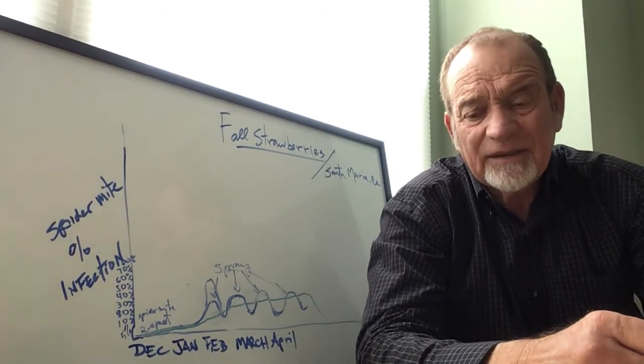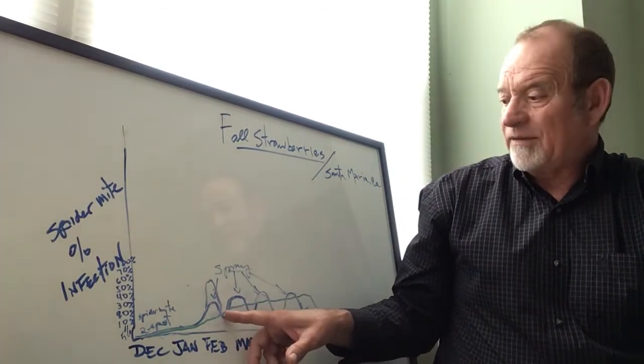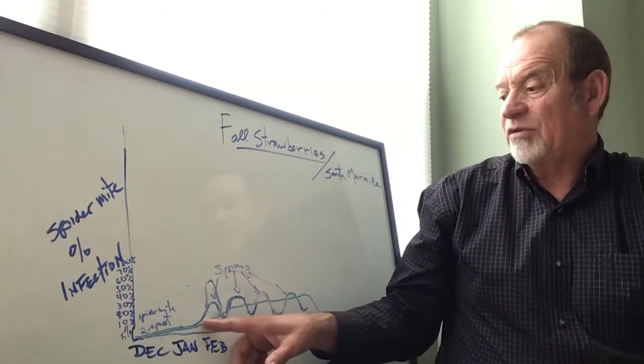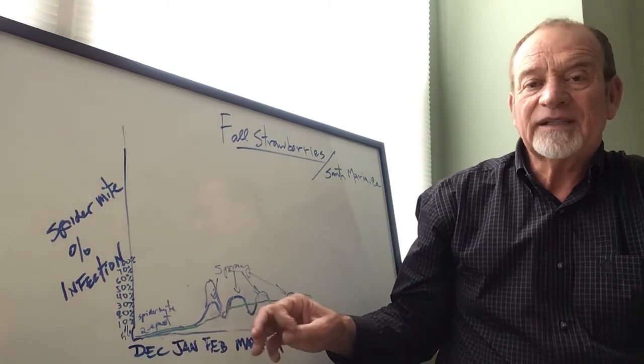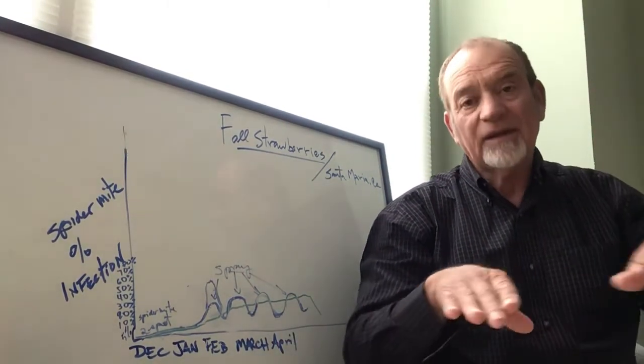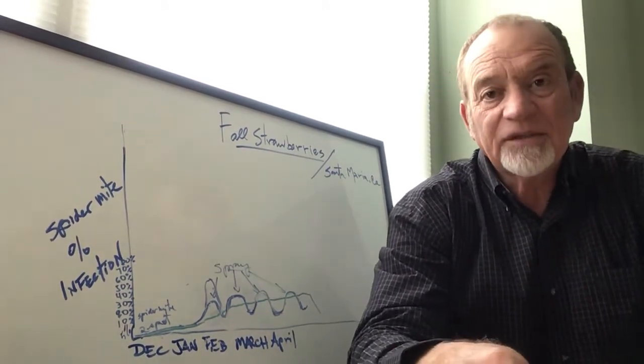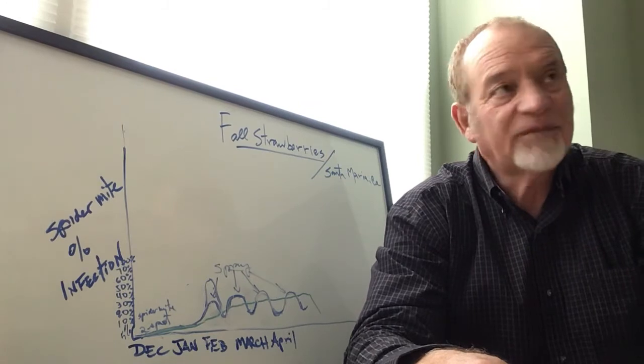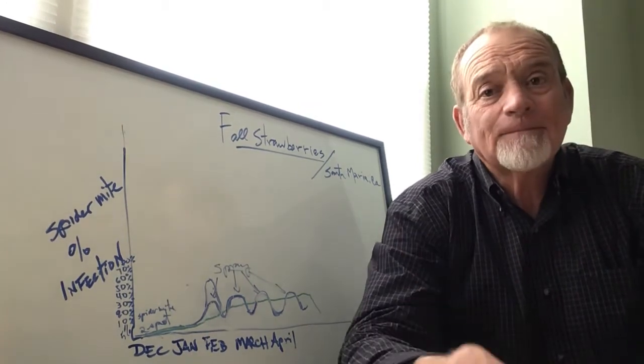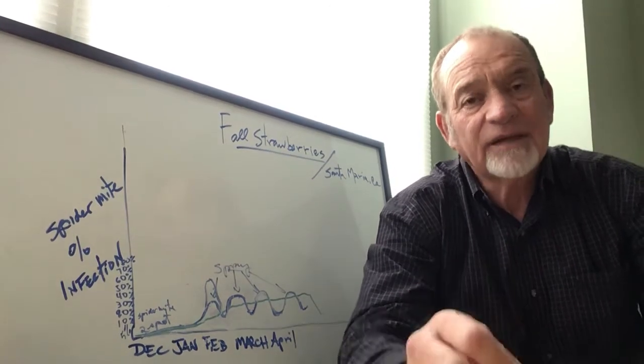You're not getting a drop in the population or a good kill, so the persimilis and californicus are going to have a hard time catching up. We're going to have a hard time creating a balance ratio between pest and predator.